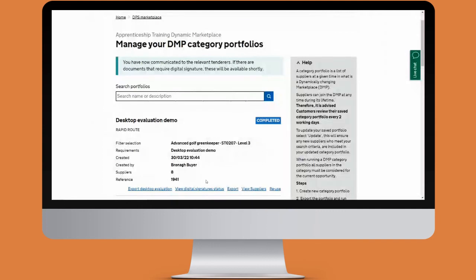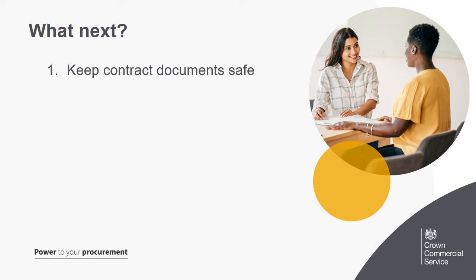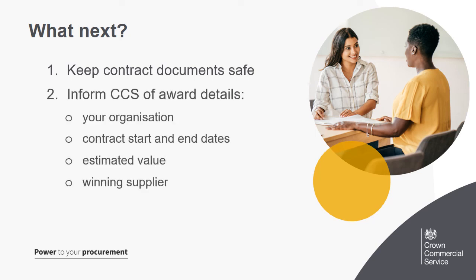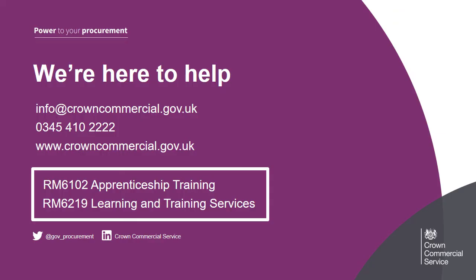Your desktop evaluation will now show as being in the completed stage, and this will be reflected on the supplier's dashboard as well. You can export the desktop evaluation and view the digital signature status. The supplier will receive any documents you've asked them to sign via DocuSign. That concludes the demonstration of the desktop evaluation. Once you've awarded your contract: one, keep your contract documents safe; two, inform CCS of the contract award and key details; and three, work with your new supplier to launch the service. For technical support, take a look at the help and contact info at the bottom of the DPS system pages. For queries on the commercial agreements, email info@crowncommercial.gov.uk mentioning the relevant agreement.